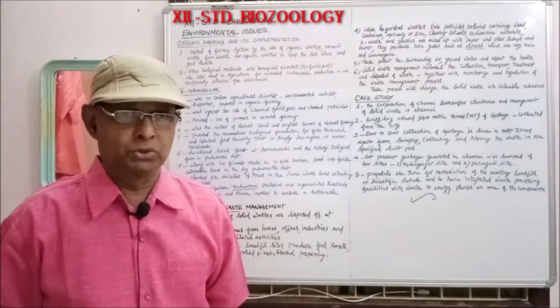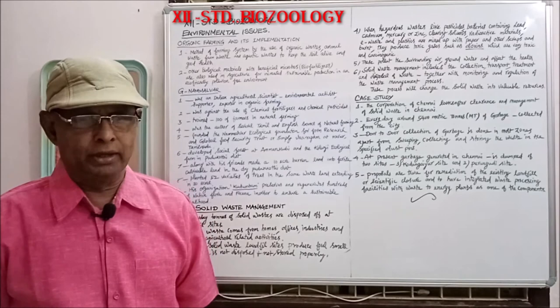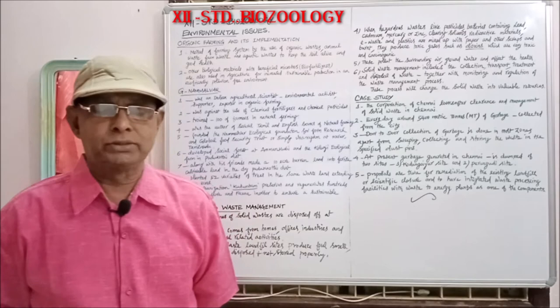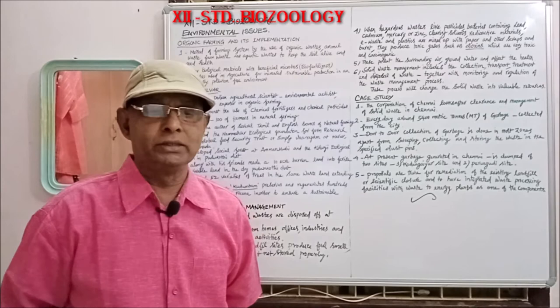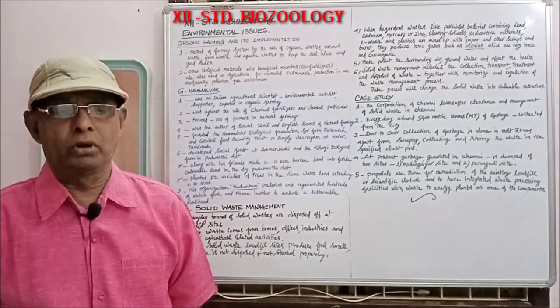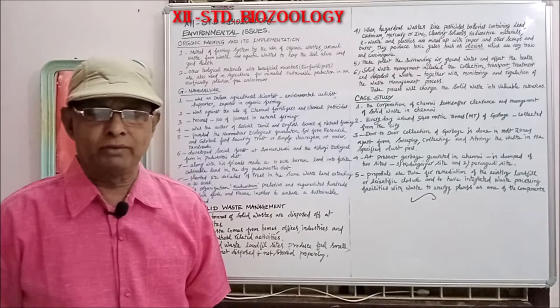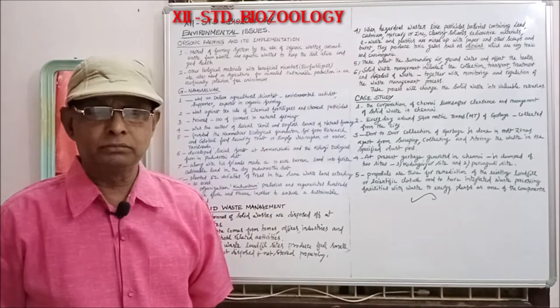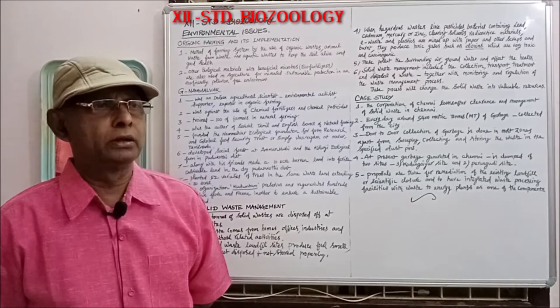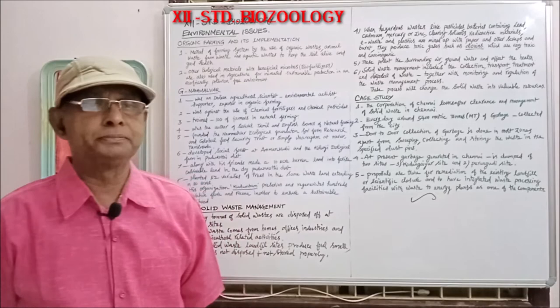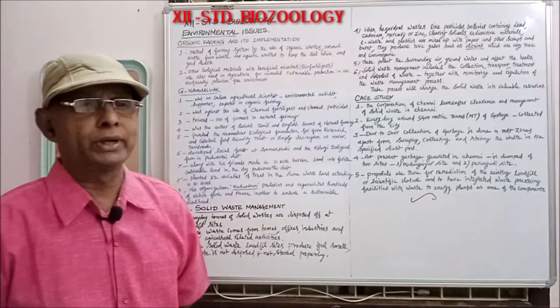Case study: The Corporation of Chennai looks after clearance and management of solid waste in Chennai every day. Around 5,400 metric tons of garbage is collected from the city. Door-to-door collection of garbage is done in most zones, apart from sweeping, collecting and storing the waste in the specified dust bins. At present, garbage generated in Chennai is dumped at two sites.